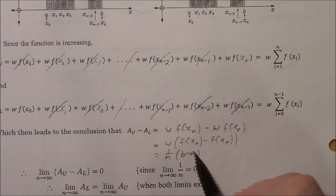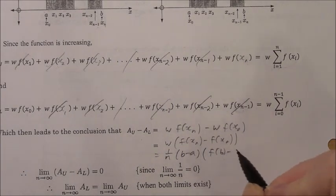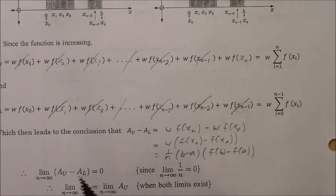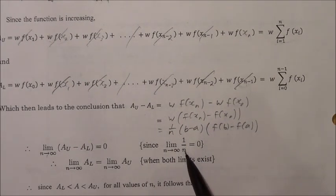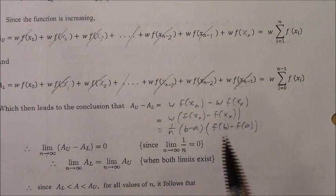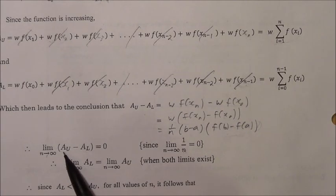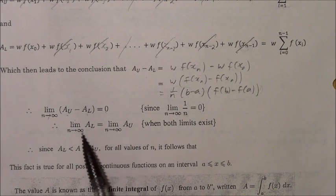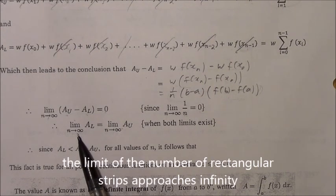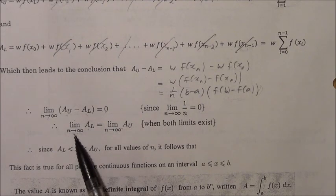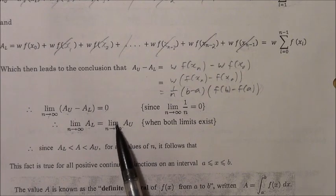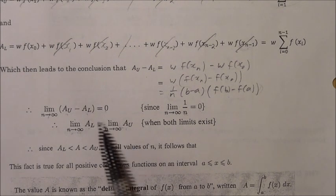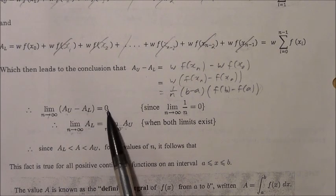We notice that as n approaches infinity, 1/n approaches 0, so this entire expression approaches 0. This means that when we subtract the upper area minus the lower area we get 0, which means they're both the same. The limit of the lower area as n approaches infinity and the limit of the upper area as n approaches infinity are equal to each other — because if you subtract them you get 0, they must be equal.